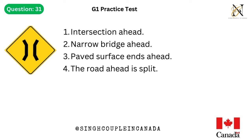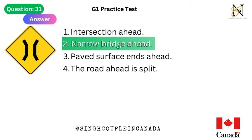Question 31. This traffic sign means: 1. Intersection ahead. 2. Narrow bridge ahead. 3. Paved surface ends ahead. 4. The road ahead is split. Answer is 2. Narrow bridge ahead.